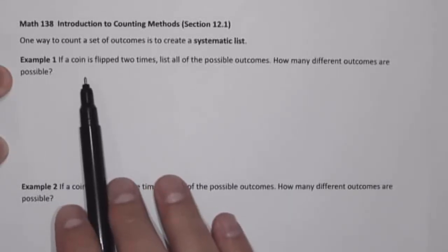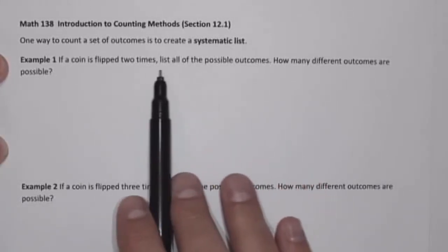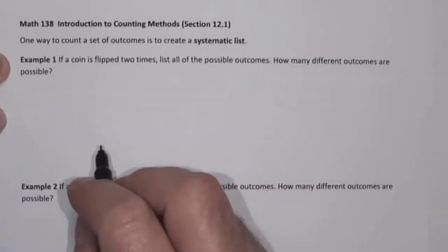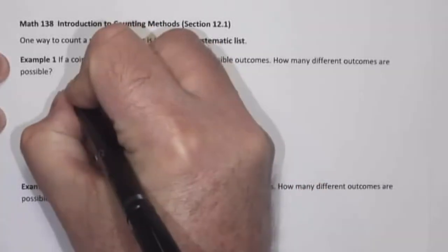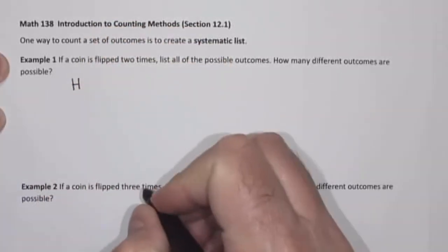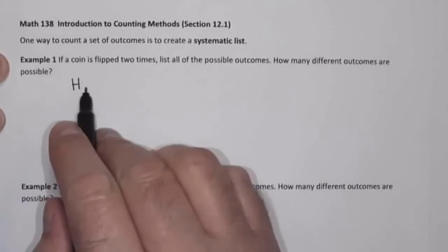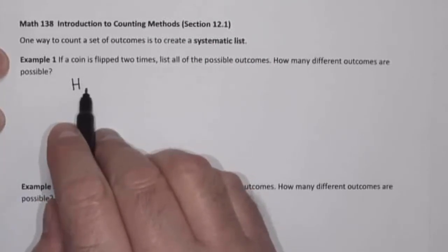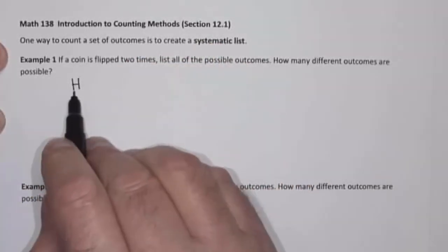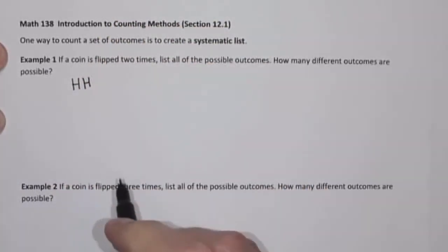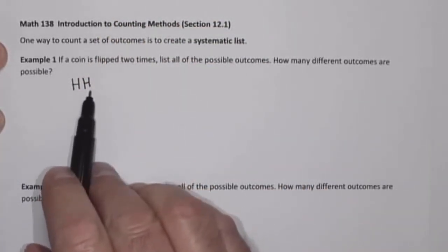If I let H represent heads and T represent tails, we're going to list all of the possible outcomes if we flip a coin two times. When we flip a coin the first time, it's possible that the coin could land on heads or it could land on tails. If it lands on heads, then for the second flip, it's also possible it could land on heads or tails. So one possible outcome is heads, heads.